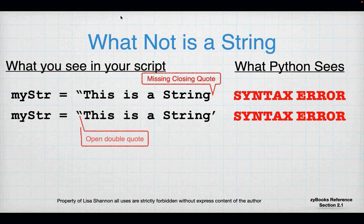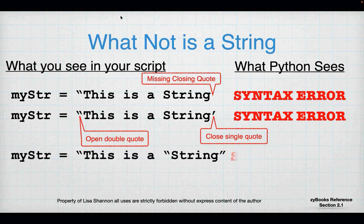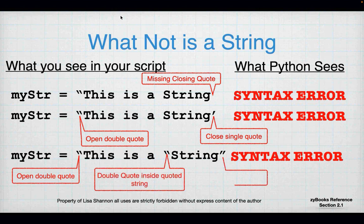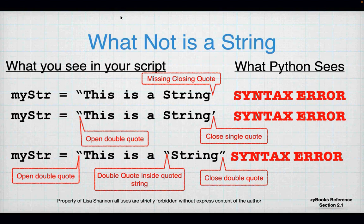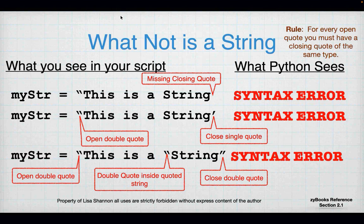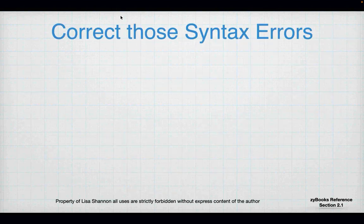You can't open a string with a double quote and close it with a single quote — that's a syntax error. Here's another syntax error: I've got an opening double quote, somewhere in there another double quote, and then a closing double quote. Python doesn't know what you mean here, so it's always going to try closing at the second double quote. Python doesn't know what to do with anything after that second double quote. For every open quote, you have to have a closing quote of the same type.